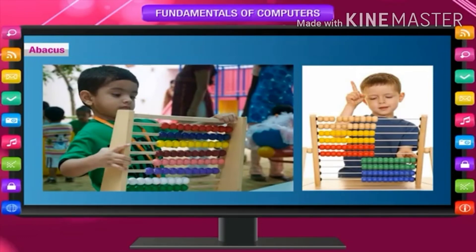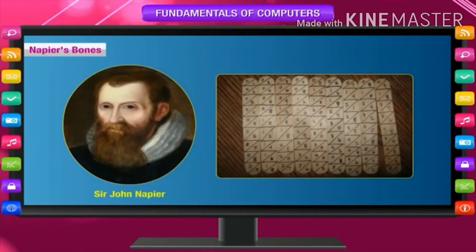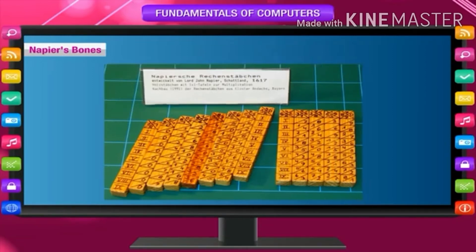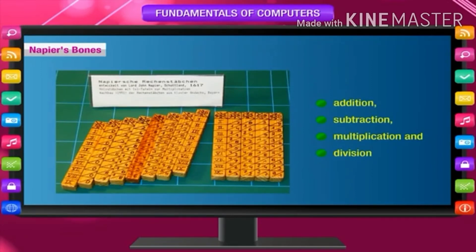It is still used to teach young children. Napier's Bones: In 1616, Sir John Napier made a calculating device called Napier's Bones. It was made up of a set of rectangular rods marked with numbers. These rods were made of wood, metal, or heavy cardboard and were called bones. This device could perform calculations like addition, subtraction, multiplication, and division. Later on, it was improved to calculate square roots as well.